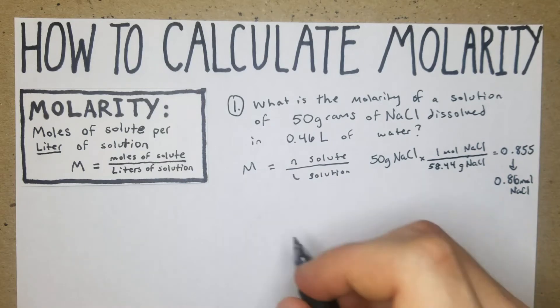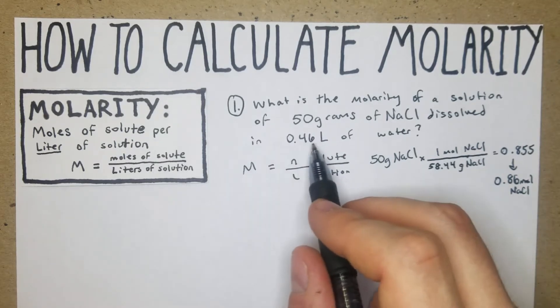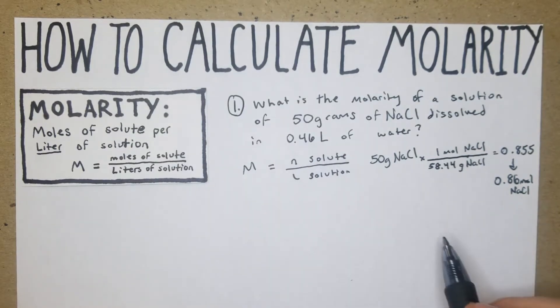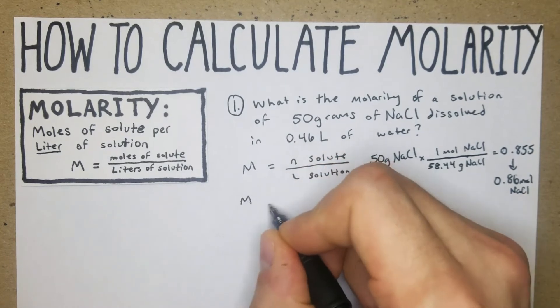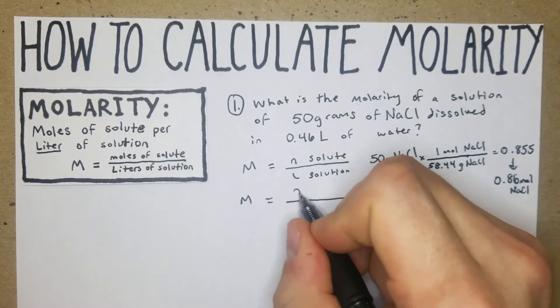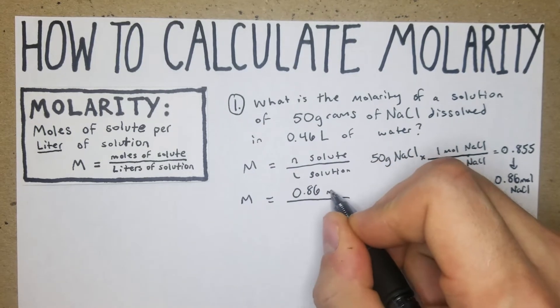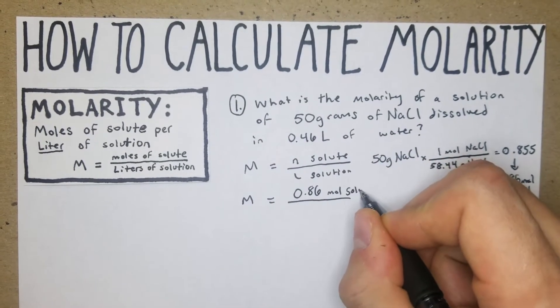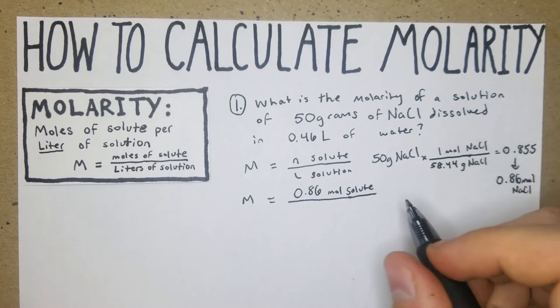Now that we have our n, our moles of solute, we can just plug it in using the liters. 0.46 is already in liters so we don't have to change anything. Straightforward: molarity is going to equal 0.86 moles of solute divided by 0.46 liters of water.